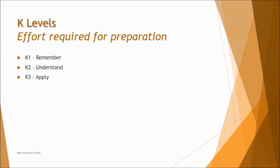Throughout the syllabus we have different K levels. Topics marked with K1 are limited to definitions or the meaning behind terms used. K2 covers a stage, process, or concept requiring you to understand what the process is about — its activities and what happens in that particular process. K3 means apply, where a simple scenario is provided and you are asked to apply your knowledge to determine the outcome, rather than answering based on a straightforward definition.